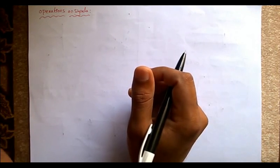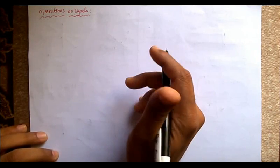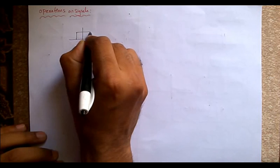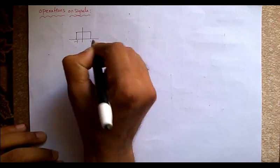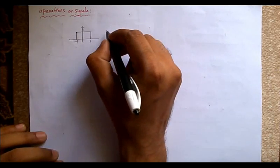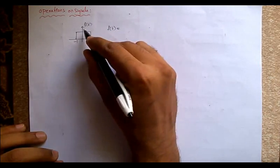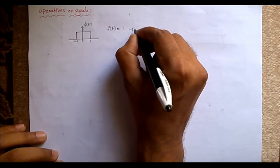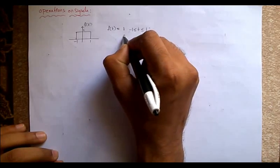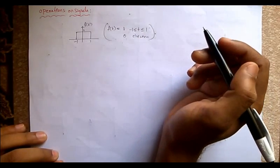For this we have to consider a reference input. Let me take the rectangular input considered in the previous video. This goes from minus one to one and the magnitude is one. Let this be f of t. Mathematically, f of t equals one for minus one less than or equal to t less than or equal to one, and zero elsewhere.